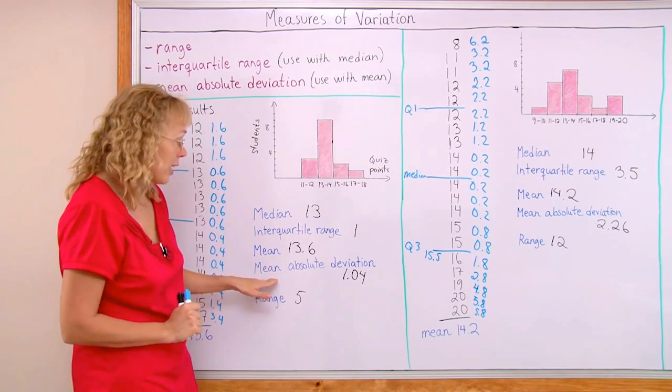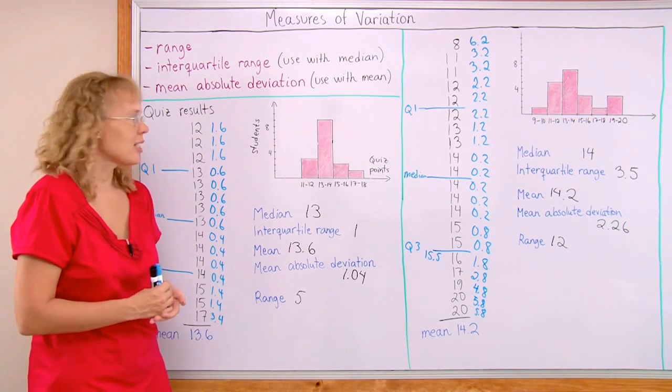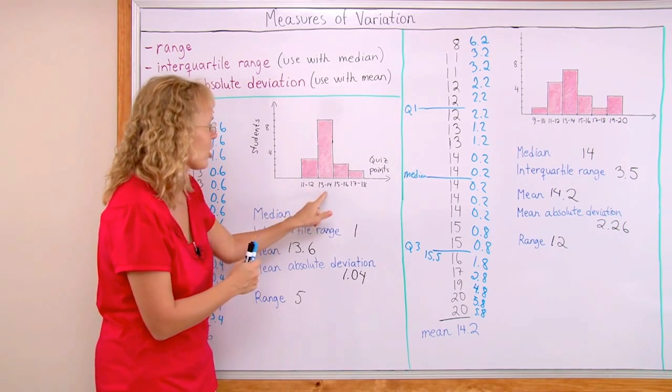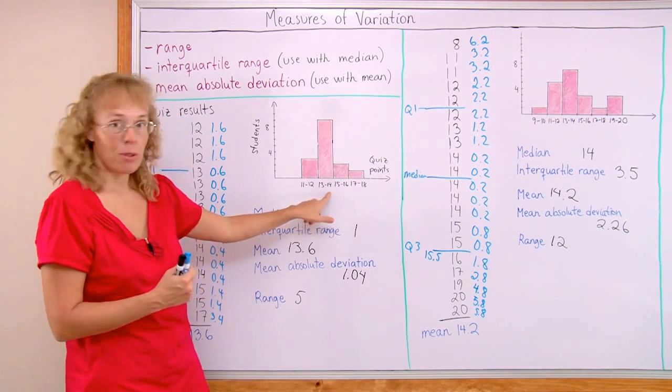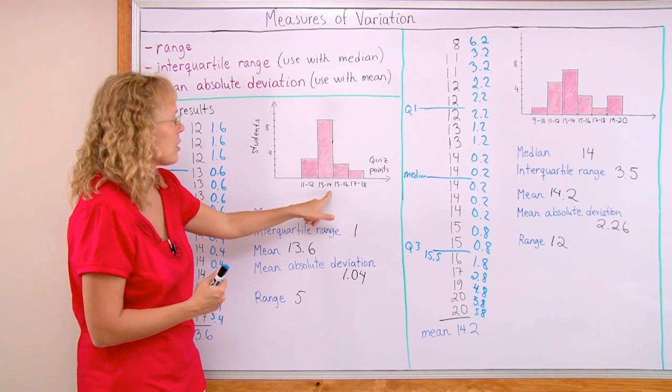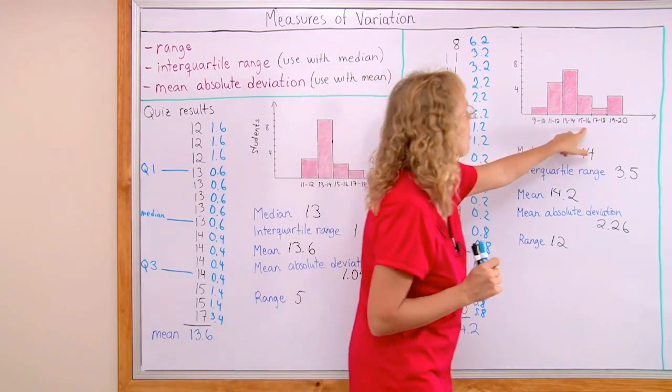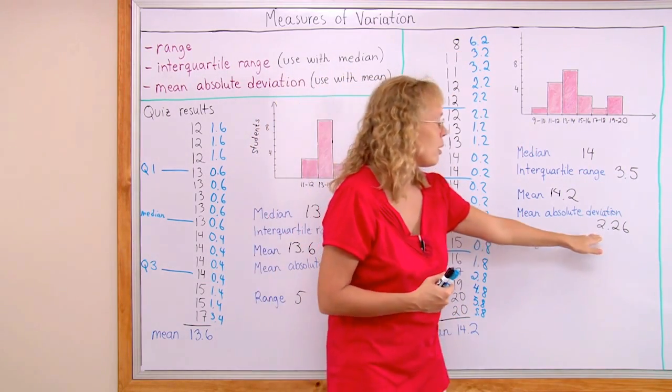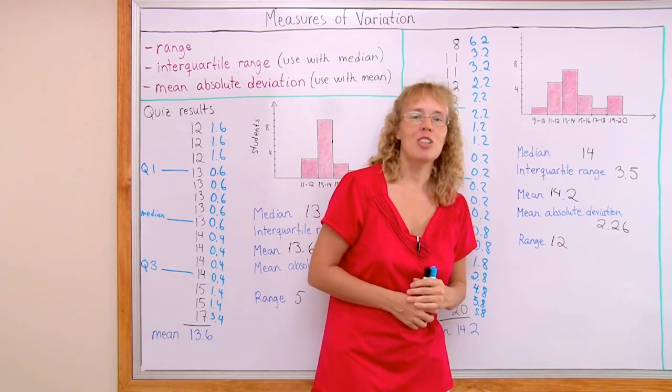And one more word about the mean absolute deviation. Like I said, it is basic. It tells us the average distance of data values to the mean. So on average, these test results just differ by about one point from the mean, which was 13.6, somewhere here. So on average, they differ by one point from the mean. Whereas over here, on average, the test results differ from the mean by over two points. So that's what I want you to remember and understand about this concept.